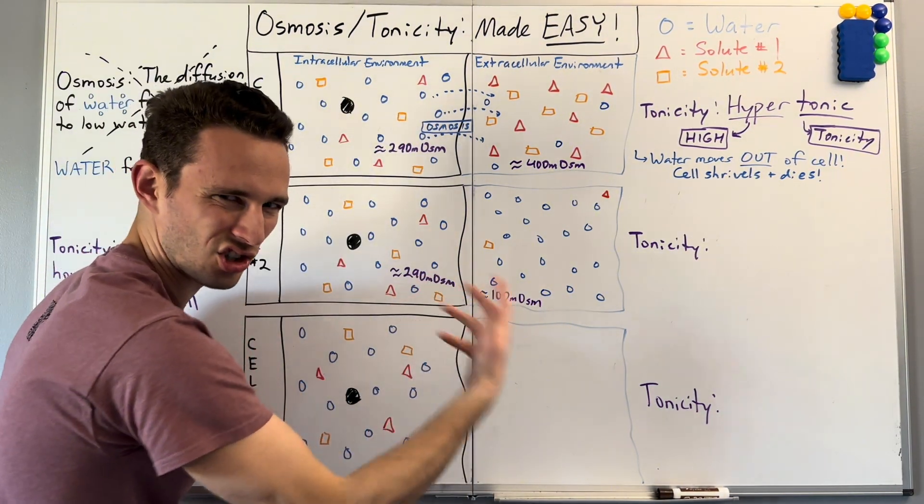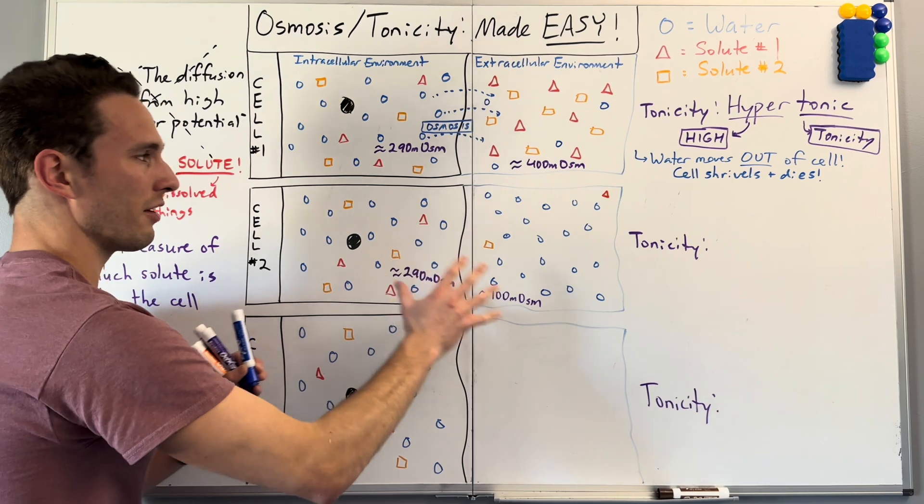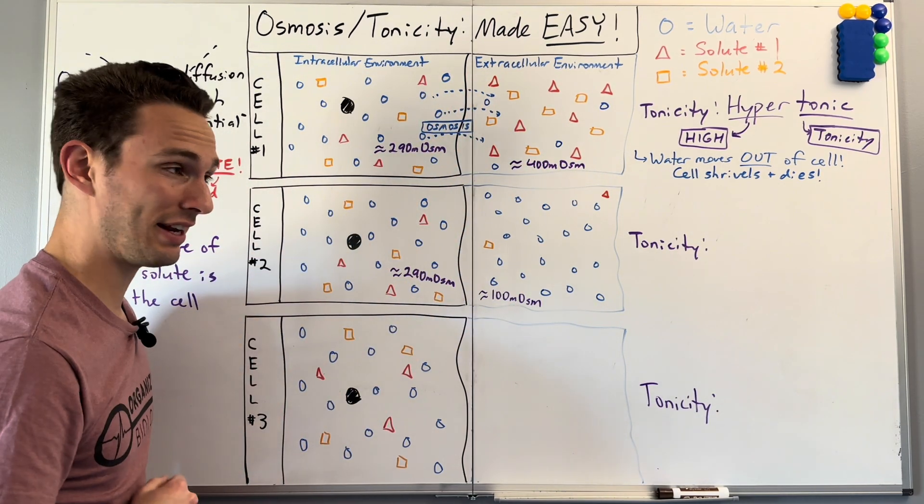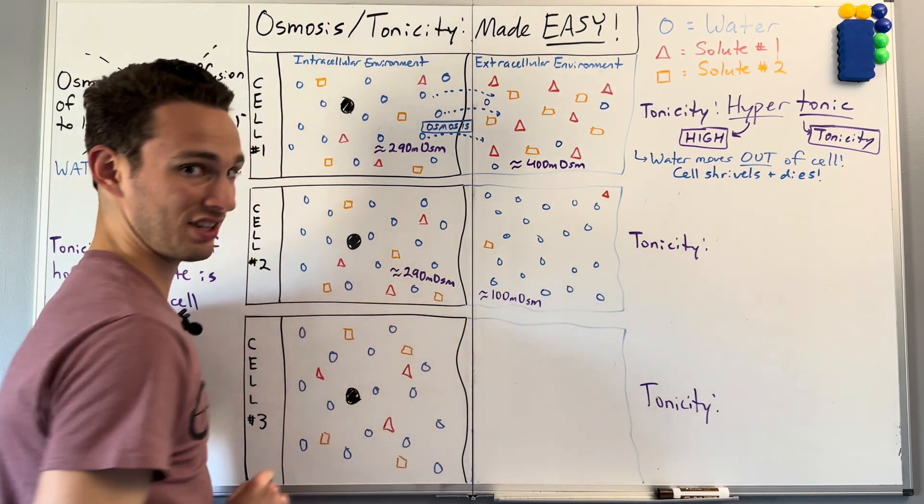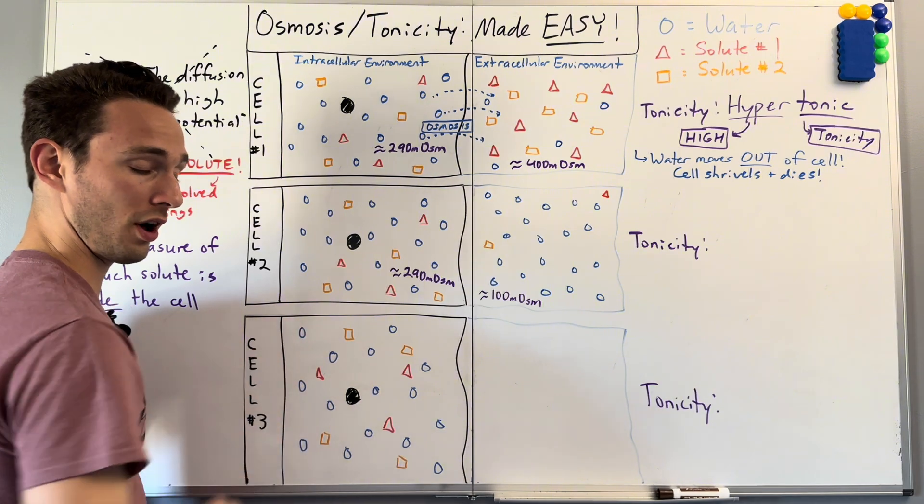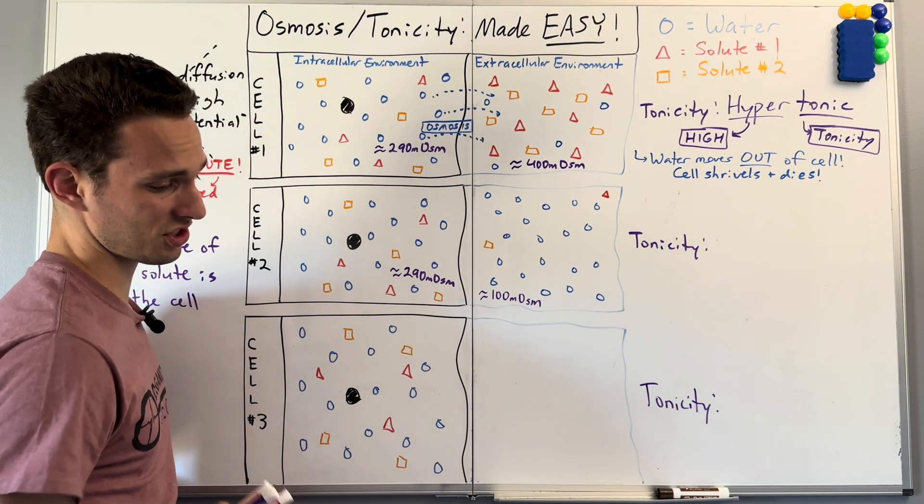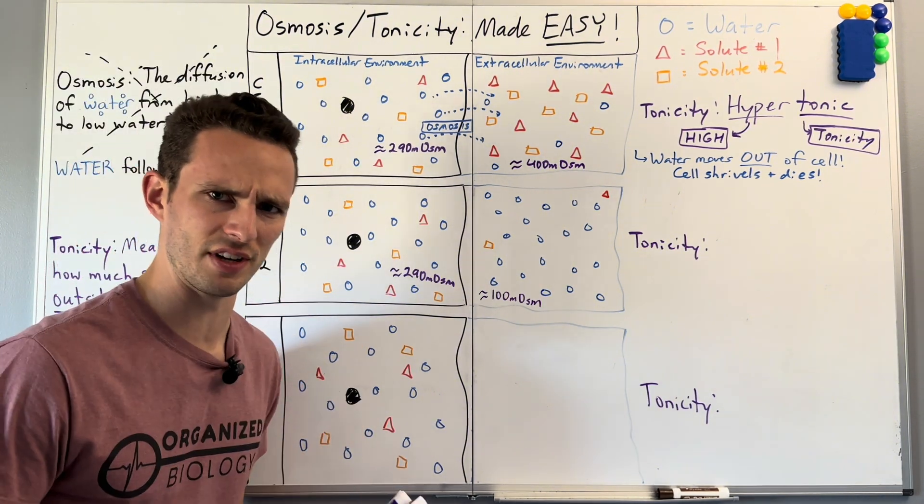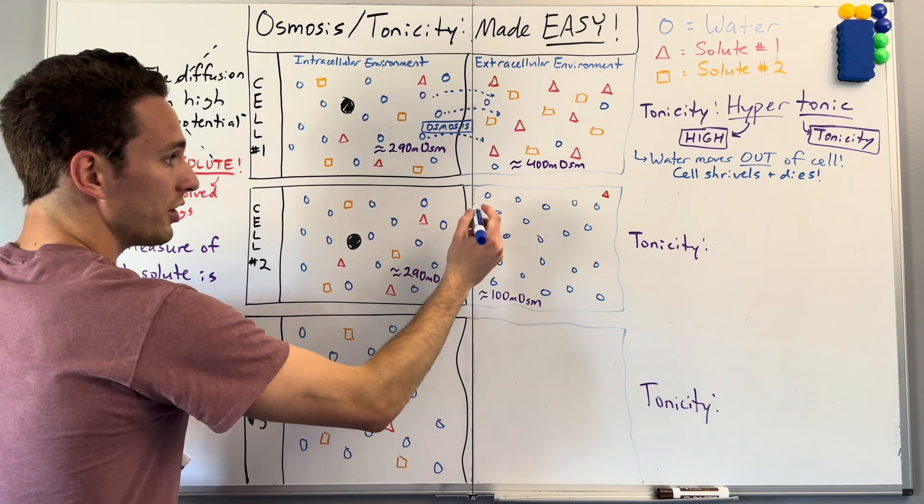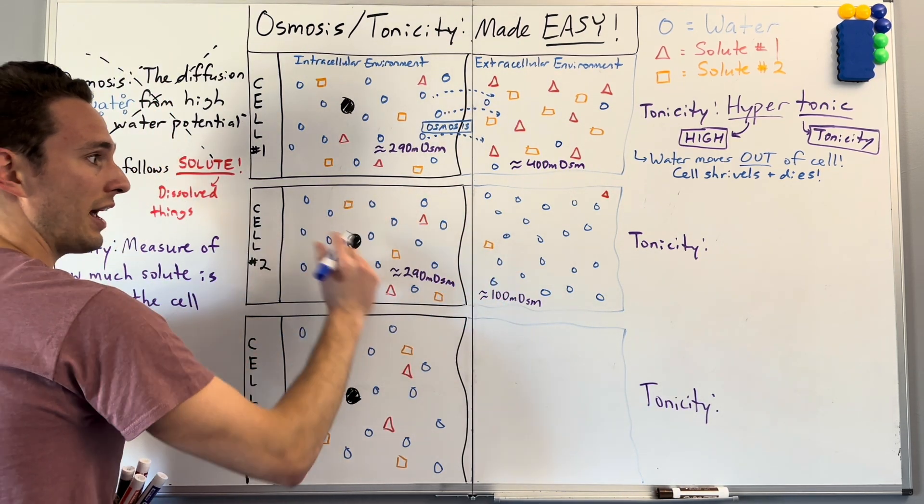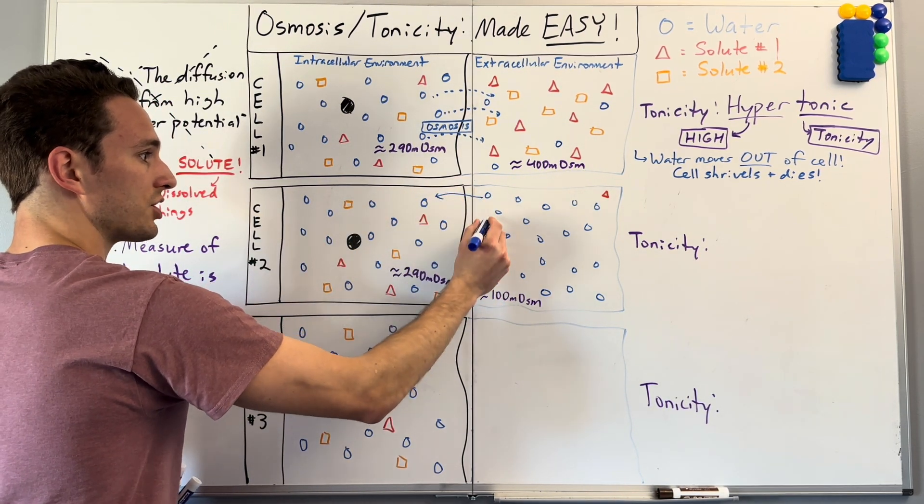So a lot less solute. So based on what we've learned from the previous example, I bet you money you can guess both the name of the tonicity, as well as where water will move. But if I just left you to do it, then I wouldn't be able to finish this video. So I'm going to do it myself.